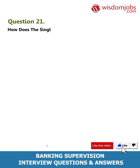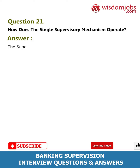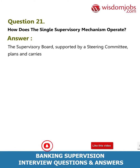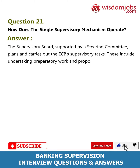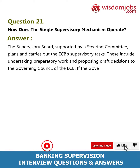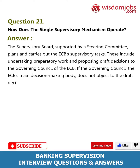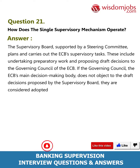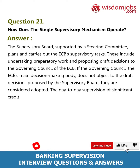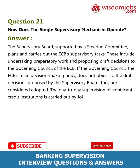Question 21: How does the Single Supervisory Mechanism operate? Answer: The supervisory board, supported by a steering committee, plans and carries out the ECB's supervisory tasks, including proposing draft decisions to the governing council. If the governing council does not object to the draft decisions, they are considered adopted. The day-to-day supervision of significant credit institutions is carried out by joint supervisory teams (JSTs).